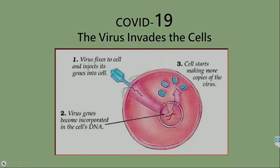Now what does this virus do? I did a picture like this for you before. The virus invades the cell, as you can see from number one. Remember I showed you the spikes that it has — it spikes and invades the cell. Then it goes into the nucleus of the cell where it gets incorporated into the DNA. Then the DNA, at number three, starts to make copies of the virus.